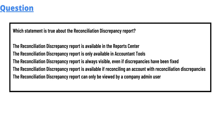We have some options here. The reconciliation discrepancy report is available in the report center. The reconciliation discrepancy report is only available in the accountant tools. The reconciliation discrepancy report is always visible even if the discrepancy has been fixed. The reconciliation discrepancy report is available if the reconciliation and account with reconciliation discrepancy. And the last option is: the reconciliation discrepancy report can only be viewed by the company admin user.